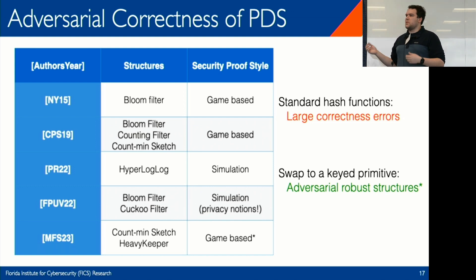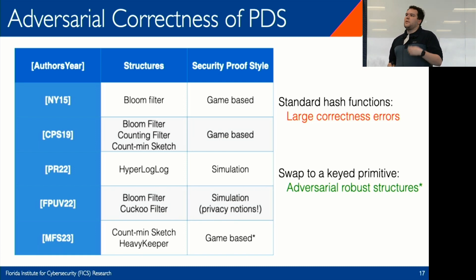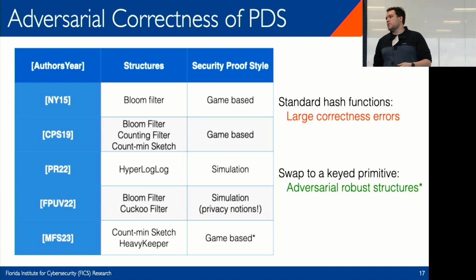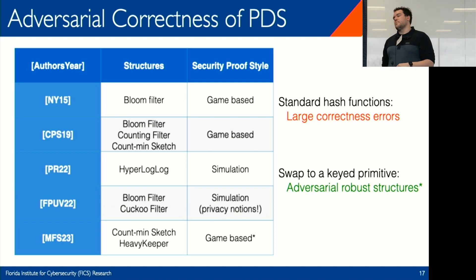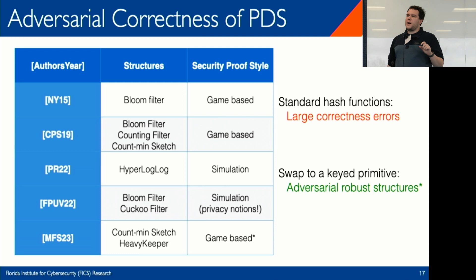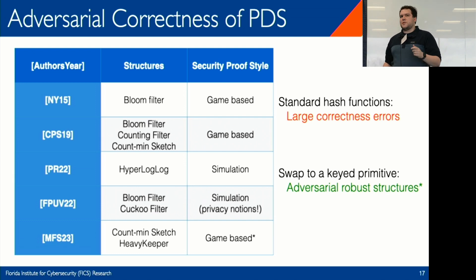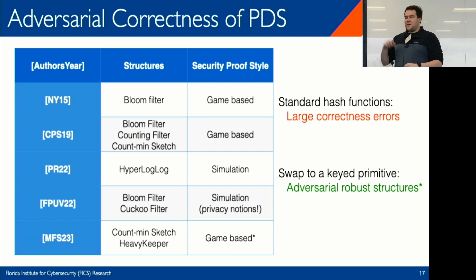In game-based proofs for the Bloom filter, you define a game where the adversary needs to find a false positive after a bounded number of sequences of queries and insertions. For the count-min sketch, the adversary must create an element with so much frequency estimation error. Simulation-style proofs compare to an ideal functionality in which the adversary's insertions are replaced with random insertions into the structure, because you don't want the ideal functionality to be a real cardinality estimator.